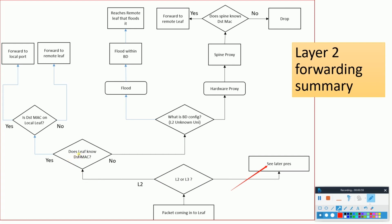It further checks if the destination MAC address is known to that leaf — yes or no. If it knows the destination MAC, it then checks if the destination MAC is local to the leaf or belongs to another leaf. If it's local to the leaf, it forwards locally. This part is handled by the Broadcom ASIC.